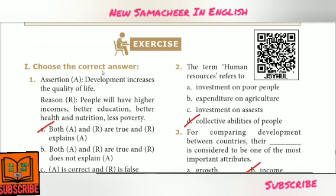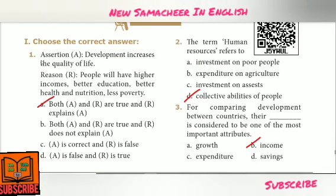First, choose the correct answer. First question is Assertion and Reason type. Assertion A: Development increases the quality of life. Reason R: People will have higher incomes, better education, better health and nutrition, less poverty. Answer: Option A — Both A and R are true and R explains A.